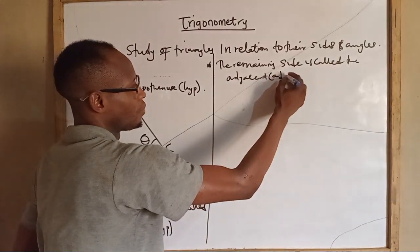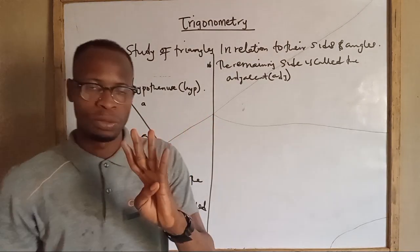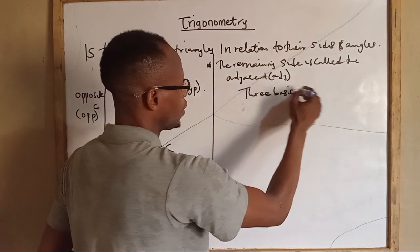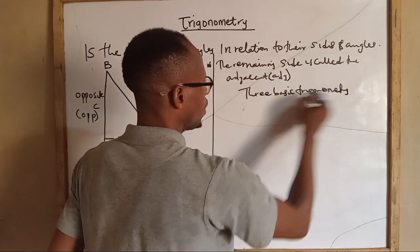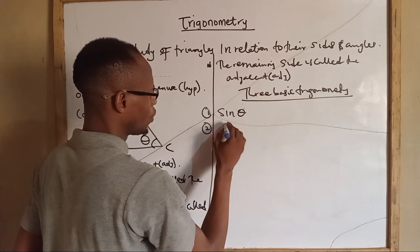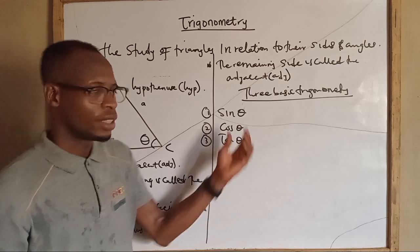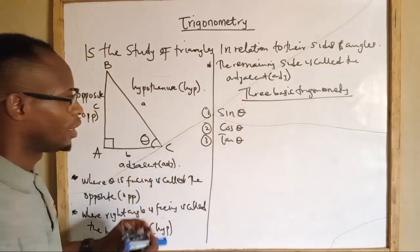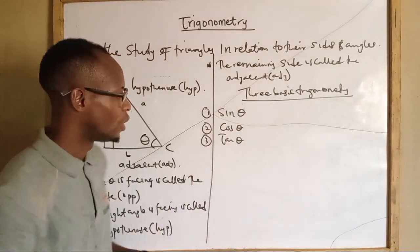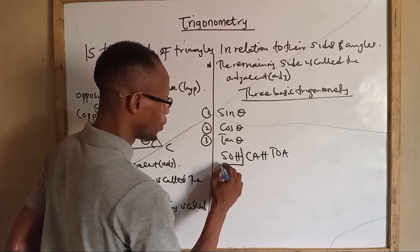Now we need to look at the three basic trigonometric ratios. The three are: sine theta, cosine theta, and tangent theta. There is a famous mnemonic used to remember sine, cos, and tan — it's called SOH-CAH-TOA, and it splits into three parts corresponding to each ratio.